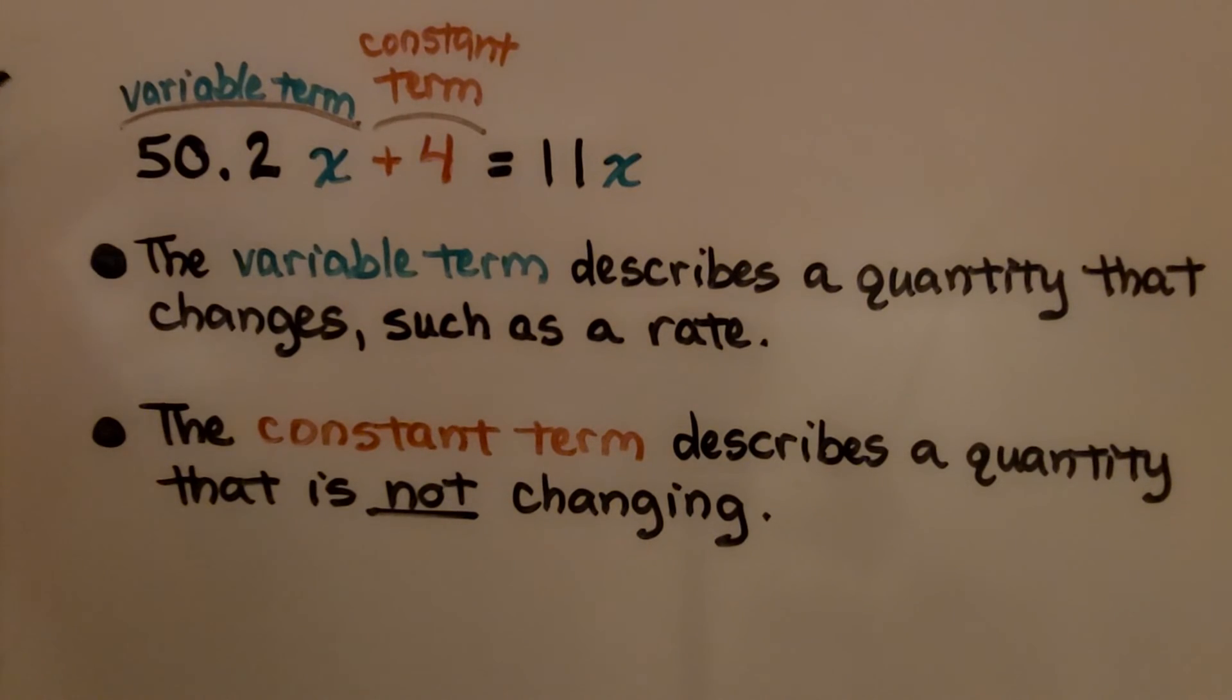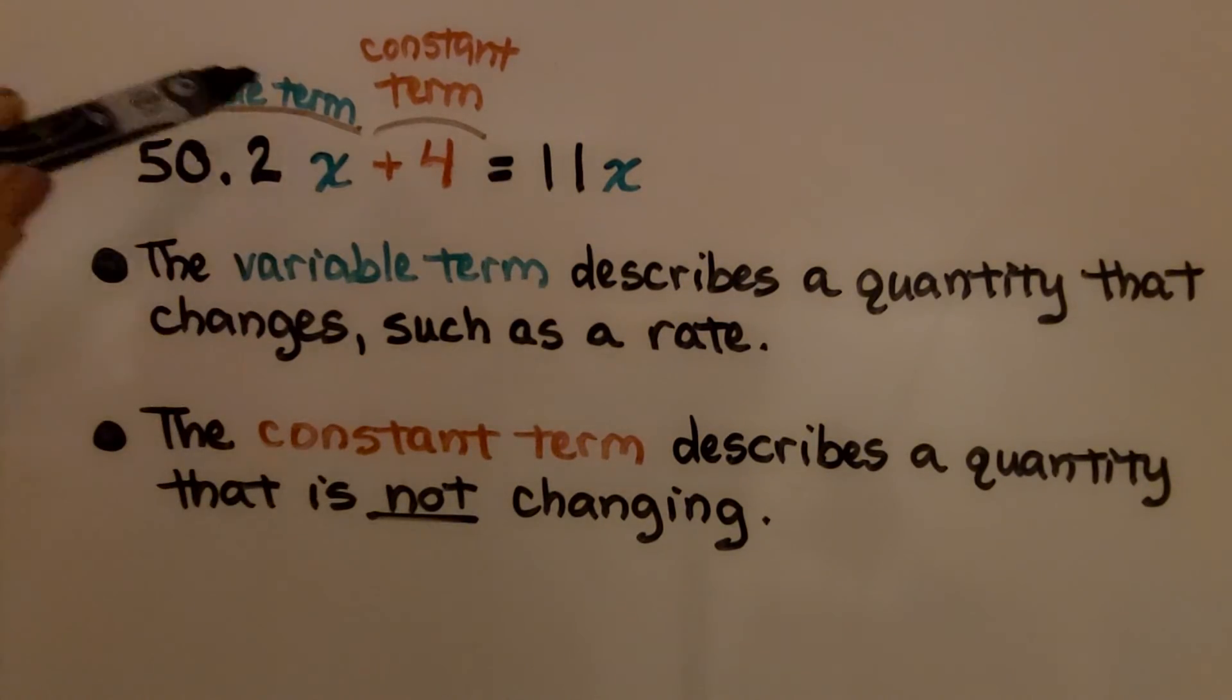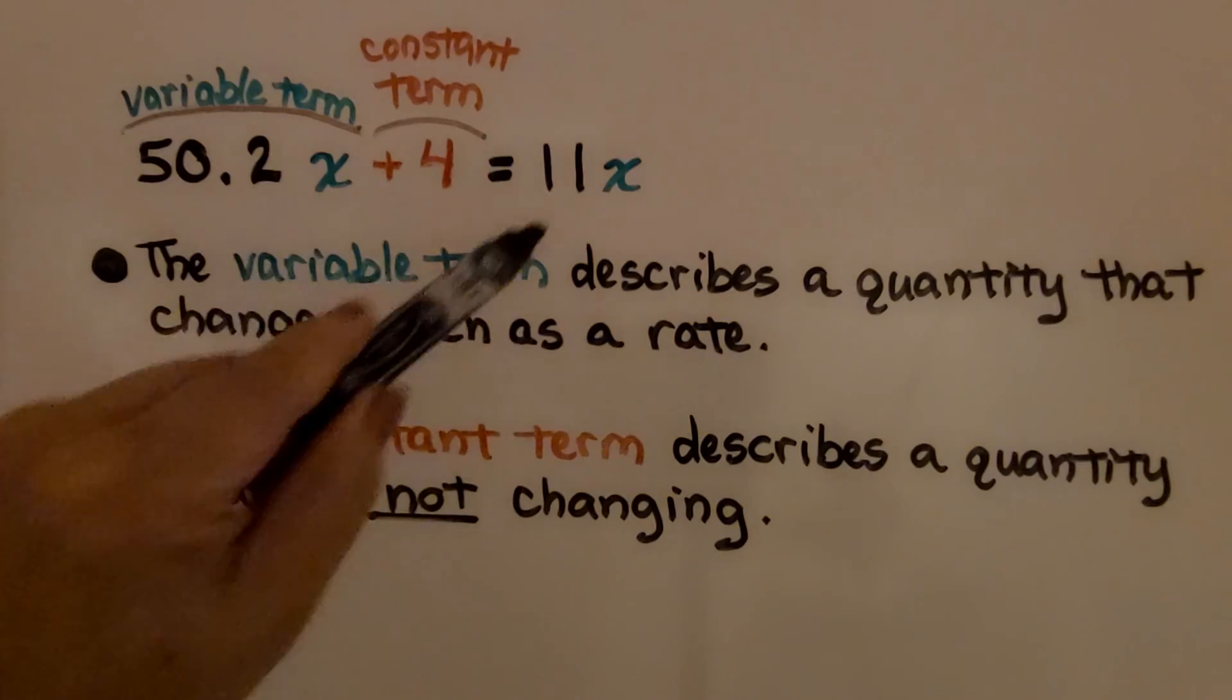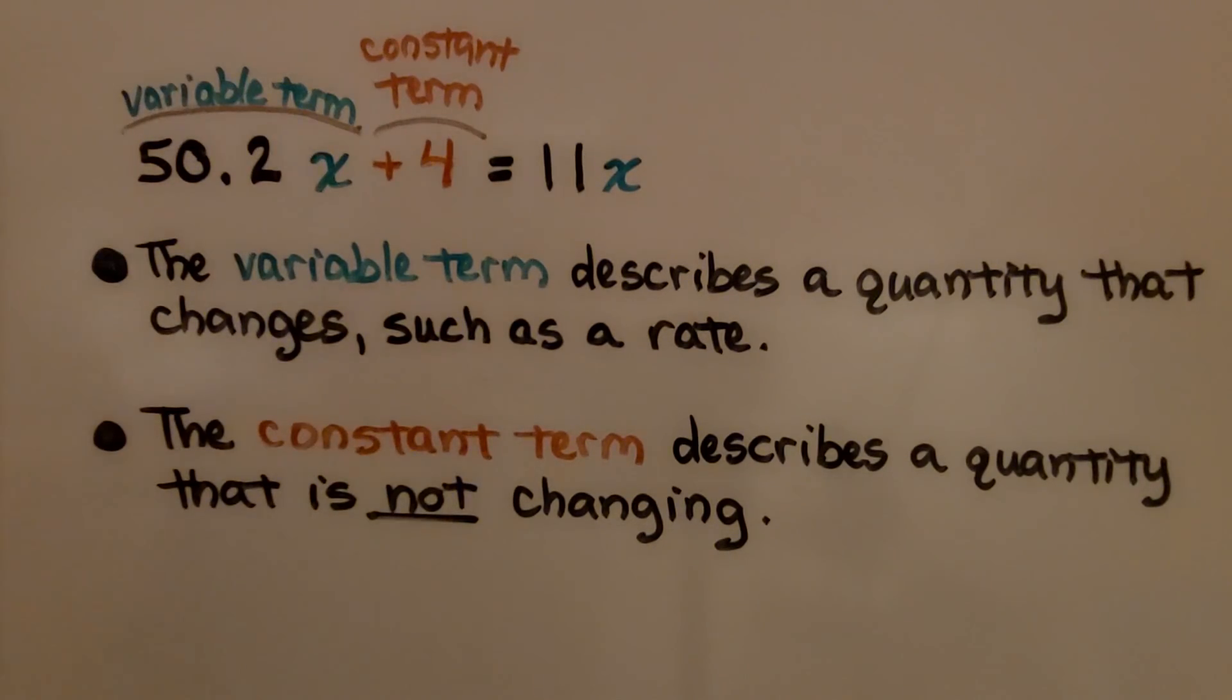So in an equation such as 50.2x plus 4 equals 11x, this is a variable term. Here's another variable term, and this is our constant term. So remember, the variable term describes a quantity that changes, such as a rate. And the constant term describes a quantity that is not changing.